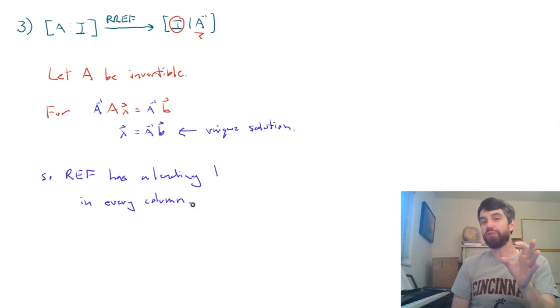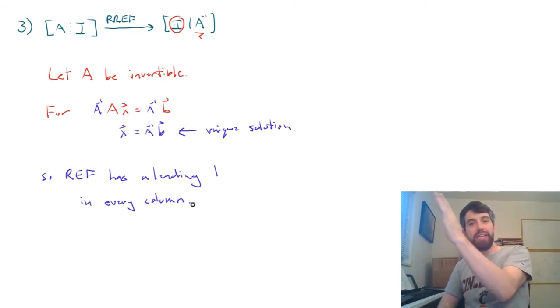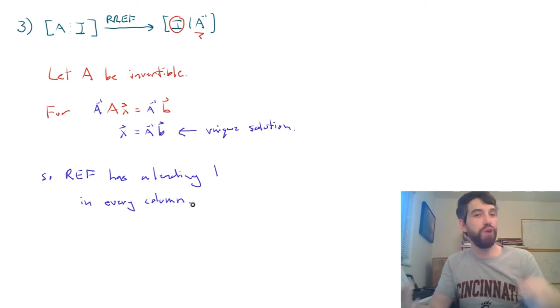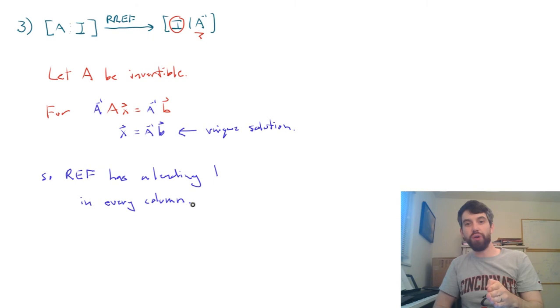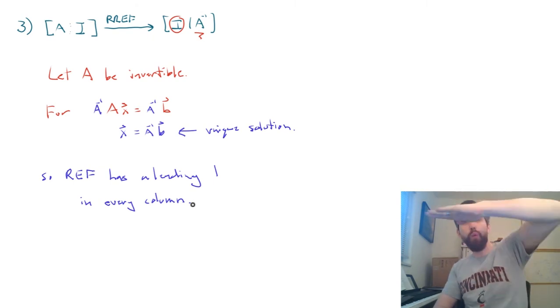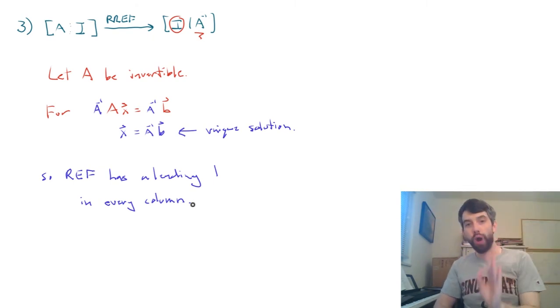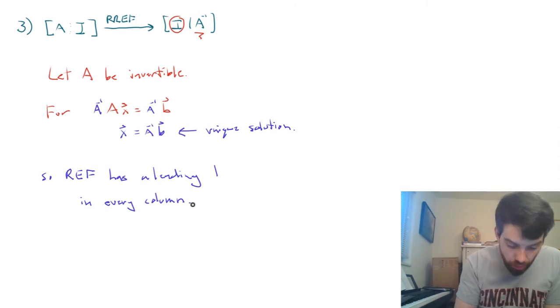But the next thing I want to think about is, look, this matrix has to be square. So if I have a leading one in every single column, but there's the same number of columns as there are rows. So if there's a leading one in every single column, there's also a leading one in every single row.